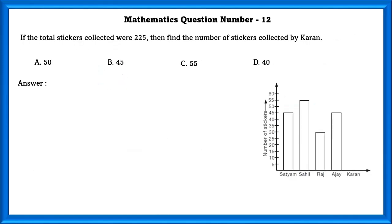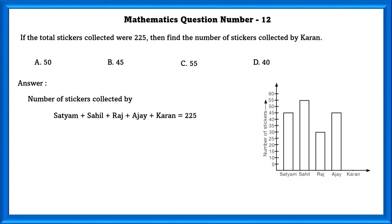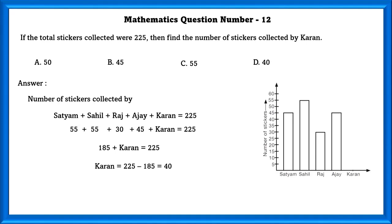Mathematics question number 12. If the total stickers collected by all friends is 225, find the number of stickers collected by Kunal. Total stickers equals 185 plus Kunal's stickers equals 225. Using this, the value of Kunal's stickers is 40.